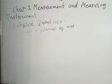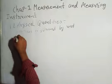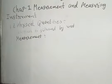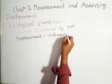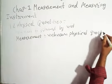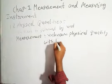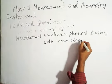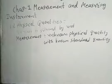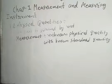In physical quantities, we choose a constant quantity as a standard. Measurement means — we take a measurement, and measurement is nothing but a comparison of an unknown physical quantity with a known standard quantity.